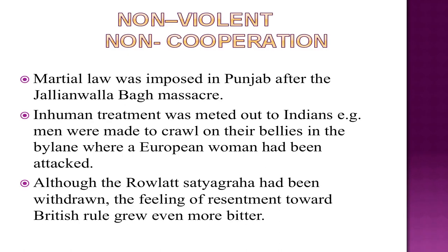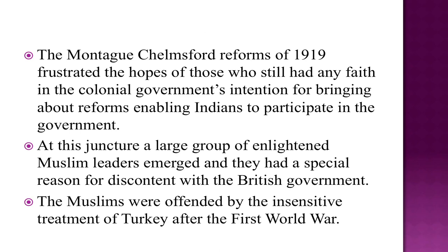This brutal incident was followed by even more brutal repression. Martial law was imposed in Punjab after the Jallianwala Bagh massacre. Inhuman treatment was meted out to Indians — for example, men were made to crawl on their bellies in the by-lane where a European woman had been attacked. Although the Rowlatt Satyagraha had been withdrawn, the feeling of resentment towards British rule grew even more bitter. The Montague-Chelmsford reforms of 1919 frustrated the hopes of those who still had faith in the colonial government. A large group of enlightened Muslim leaders emerged with a special reason for discontent with the British government.